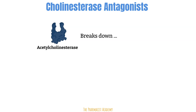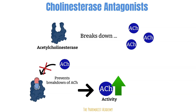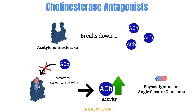Cholinesterase inhibitors. Acetylcholinesterase is an enzyme in the body that breaks down acetylcholine, making it inactive. Acetylcholinesterase antagonists are drugs that occupy the acetylcholine binding site on that enzyme and prevent the real acetylcholine from binding, so it doesn't get broken down. This increases the amount of active acetylcholine and its activity. An example is physostigmine, used to manage angle-closure glaucoma. The pathophysiology involves dilation of the pupil, which contributes to blockage of aqueous humor drainage and a buildup leading to increased intraocular pressure. Physostigmine increases acetylcholine levels, leading to pupil constriction and drainage of the aqueous humor.